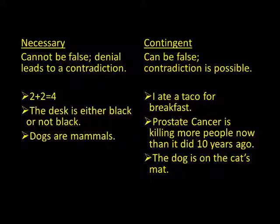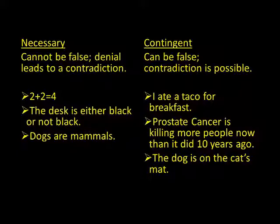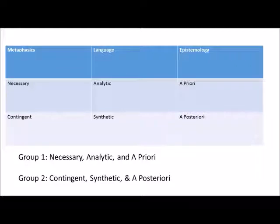Now let's do the last distinction: necessary versus contingent. A necessary truth is one that cannot be false — the denial leads to a contradiction. Examples: 'The desk is either black or not black,' 'Cats are mammals.' It's simply not possible for claims that are necessarily true to be false. Contingent truths, on the other hand, are not necessary and whose opposite or contradiction is possible — contingent truths could have been different. Examples: 'I ate a taco for breakfast,' 'Prostate cancer is killing more people now than it did 10 years ago,' 'The dog is on the cat's mat' — all contingent, because each could have been otherwise.